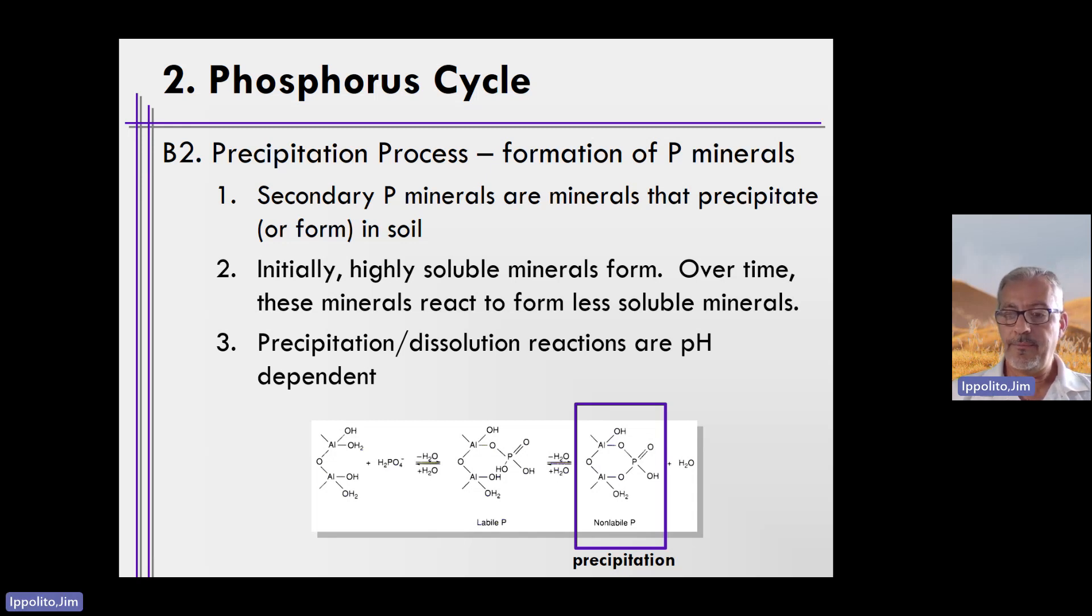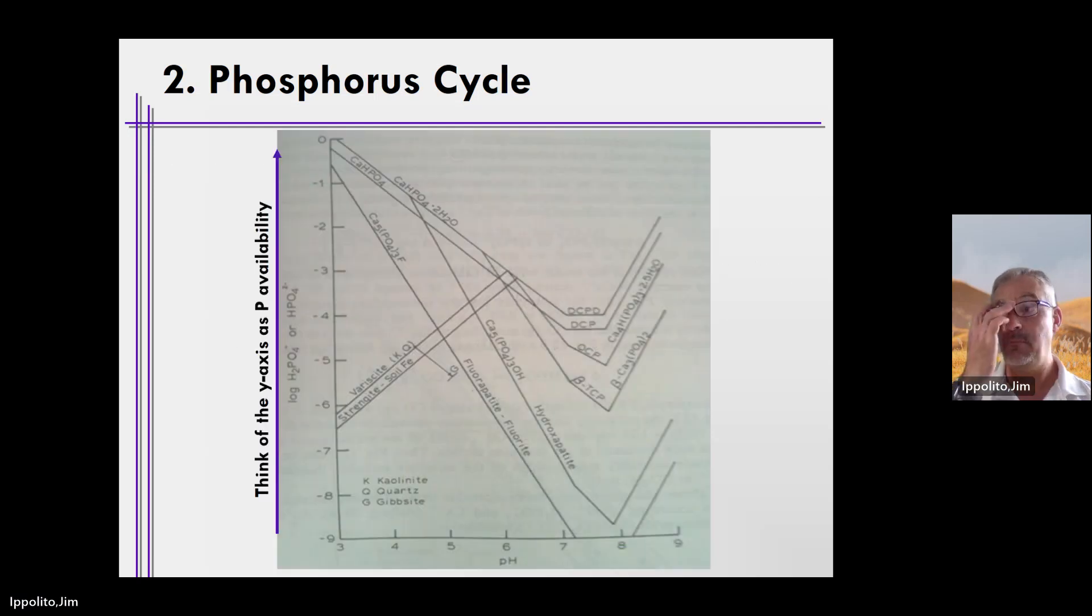I did mention this already, that these precipitation reactions can go backwards to become dissolution reactions. These are pH dependent reactions. So let me share with you how this works. This is a diagram that shows you pH on the x-axis from acidic to basic, and on the y-axis, this is the log of H2PO4- or HPO42- availability. I like to think of the y-axis as phosphorus availability. The greater you are on the y-axis, the greater phosphorus is available, and lower on the y-axis, the less phosphorus is available.